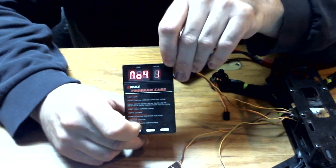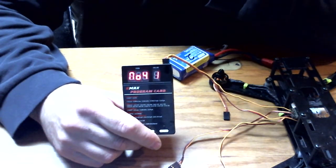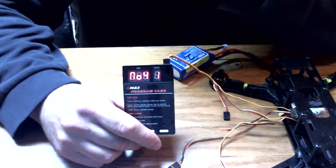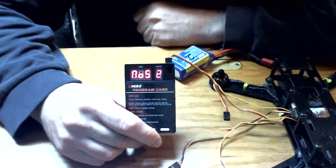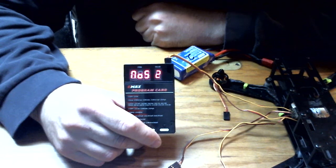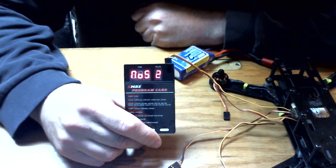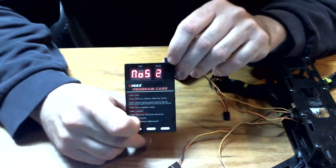Next option is your curve mode. There are four different options, and I have mine on number one for off. Number five is your control frequency. There's two options, 8 and 22. I'm going with the 22.